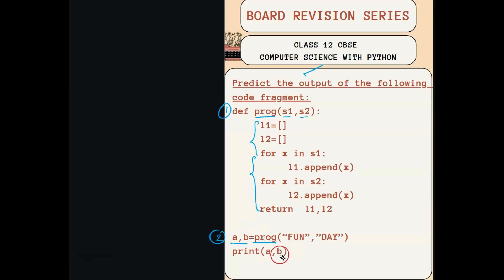And this prog is the function name. So what it means, this prog is getting called, the function is getting called here. Now a becomes FUN and b becomes DAY. Once the function is getting called, what will happen? So this FUN is passed on to s1. That is, the a value FUN is getting passed on to s1. Now the value of s1 is FUN here. And the value of b, that is DAY, will be getting passed on to s2. That is, s2 contains DAY now. Let us write s1 and s2 here. s1 is equal to FUN, and s2 is equal to DAY.